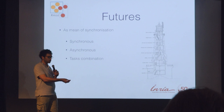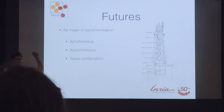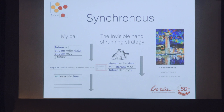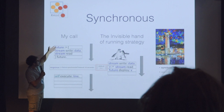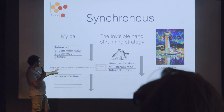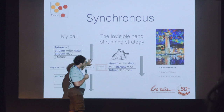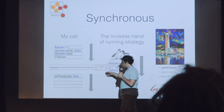Synchronization can be done by synchronous synchronization, asynchronous synchronization, or task combination. The synchronous synchronization works like a classical semaphore. We instantiate a new task and execute it as a future. Then this calling thread sends the message synchronize with timeout, waiting for the response. Meanwhile, our invisible hand of the running strategy is going to execute the task, deploy the value into the future, making it available and unlocking the first thread. So it runs asynchronously.